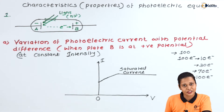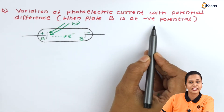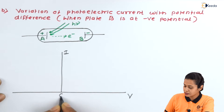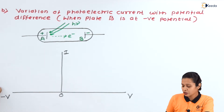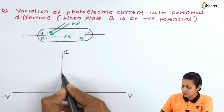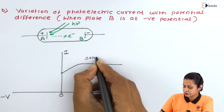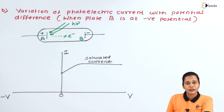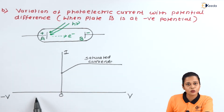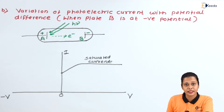Now consider metal plate B is at negative potential. For the variation of photoelectric current with potential difference: we know that even at zero potential there is a very small value of current. For positive potential of plate B, we get the rising graph up to saturation. But when plate B is at negative potential, emitted electrons have negative charge and plate B also has negative charge, so there is repulsion. The number of electrons reaching plate B decreases. Starting from a current of N electrons at zero potential, as we increase the negative potential, more electrons are repelled.